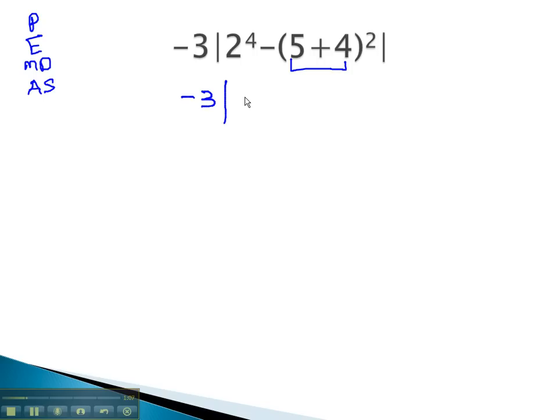This gives us negative 3 times the absolute value of 2 to the 4th, minus 5 plus 4 is 9, squared.